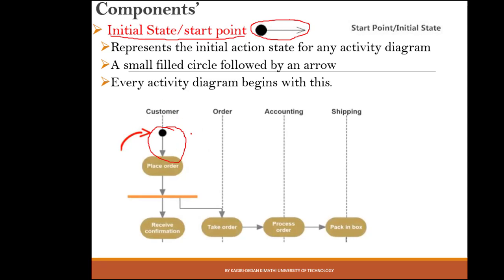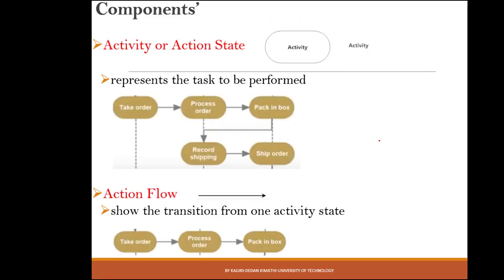The next component is the action state or activity state, represented by a rounded rectangle. It represents the tasks that need to be performed. For example, activities such as 'take order', 'process order', 'pack in a box', 'ship order', and 'record shipping' are each shown as a rounded rectangle.